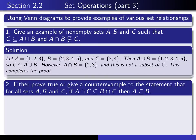Okay, here's the other exercise that I want you to do. It says, either prove true or give a counterexample to the statement that for all sets A, B, and C, if A intersect C is a subset of B intersect C, then A is a subset of B.